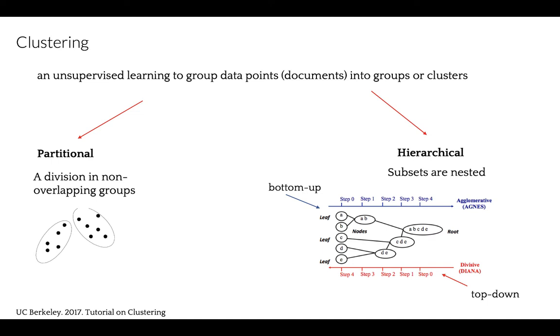In Partitional, data objects are divided into non-overlapping subsets, where each data point belongs to only one subset. In Hierarchical, a set of nested clusters are organized as a hierarchical tree. Let's focus on Hierarchical clustering for text clustering.